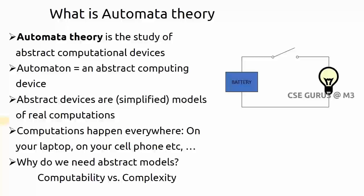We will discuss computability further in the concepts of NP-hard and NP-complete. Complexity means: if you can find the answer, what is the complexity involved, and is there an easier way compared to the present method? In order to find a solution for a particular problem, we require both computability and complexity, and these things can be explained by automata theory.